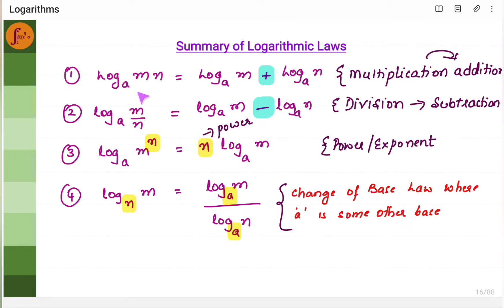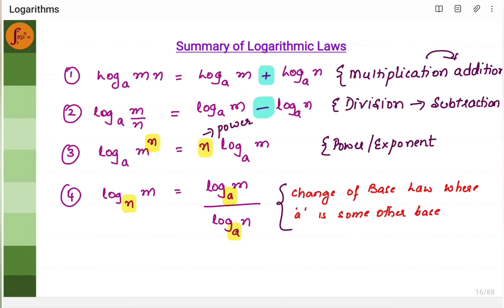The first law is log of mn. If you have multiplication, then you will have to write it as log of m plus log of n. So if you have m into n, it is going to become log m plus log n. Multiplication becomes addition.